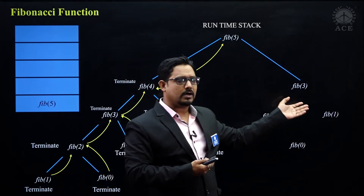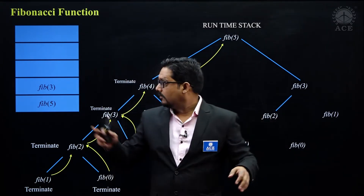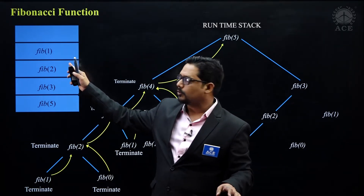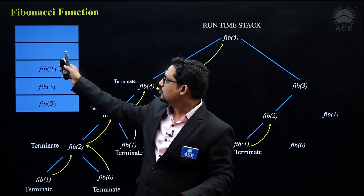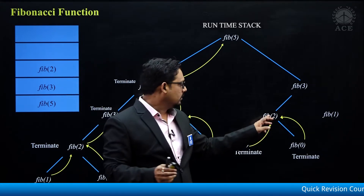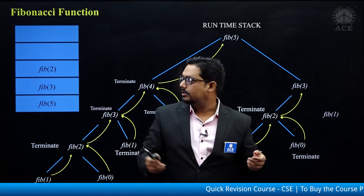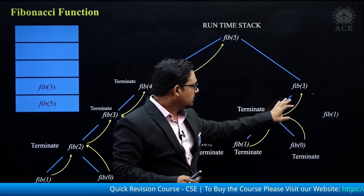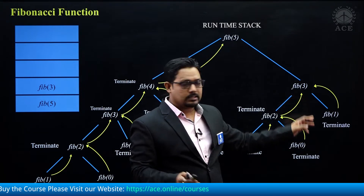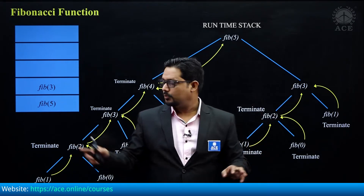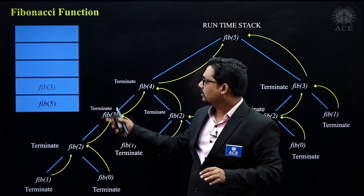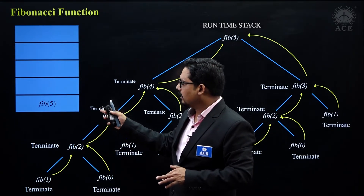Now the function Fib3 will be called on the Fib5 side. Fib3 will have its activation, Fib3 will call Fib2, Fib2 will have an activation, Fib2 will call Fib1 — this will again grow up to depth, then terminate and control will return. Then it will call Fib0, Fib0 will be pushed, terminate, control will return, Fib0 will be gone. Fib2 now has a value, terminates, and control returns. Then the activation of Fib1 will start and upon termination it returns back. Now we have only Fib3 and Fib5 activations remaining; Fib3 will also terminate, control returns, and Fib5 is finally popped out of the stack.